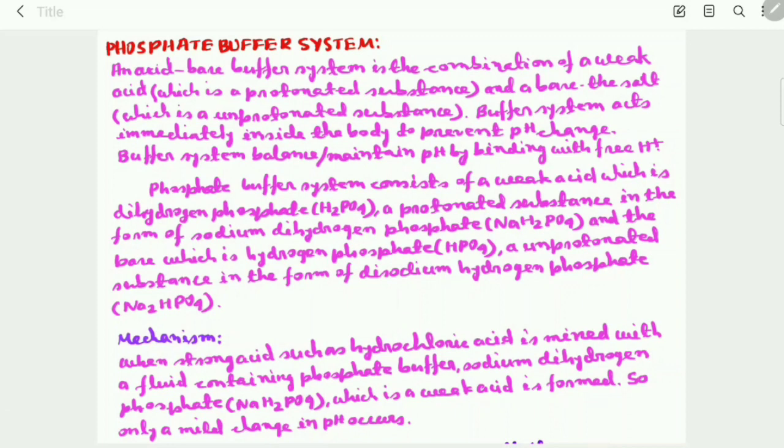Phosphate buffer system consists of a weak acid, which is dihydrogen phosphate H2PO4, a protonated substance in the form of sodium dihydrogen phosphate NaH2PO4, and the base, which is hydrogen phosphate HPO4, an unprotonated substance in the form of disodium hydrogen phosphate Na2HPO4.